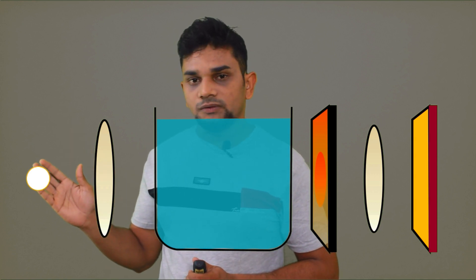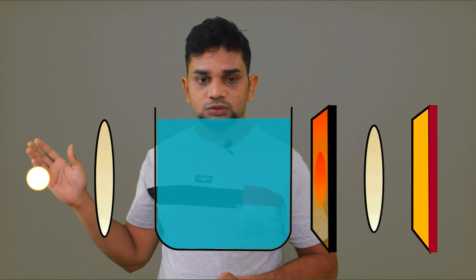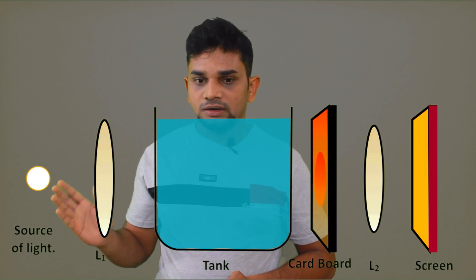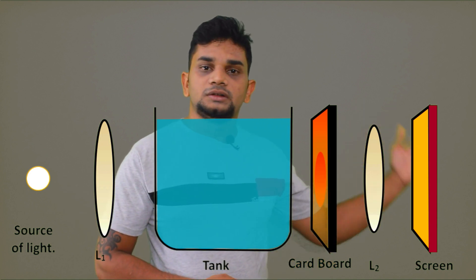The materials we need to perform this experiment are: a source of white light, a convex lens L1, a glass tank with water, a cardboard with a hole, another convex lens L2, and a screen.